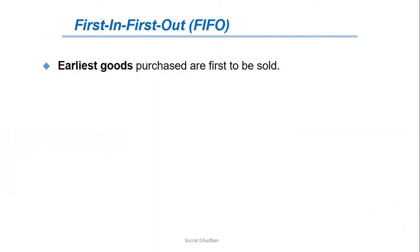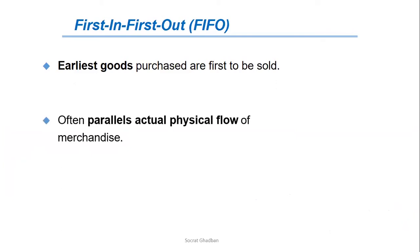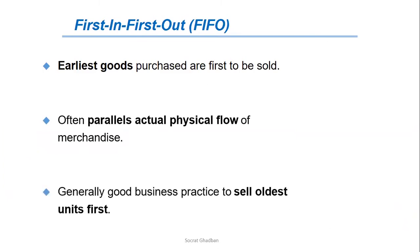The first-in-first-out method assumes that the earliest goods purchased are the first to be sold. FIFO often parallels the actual physical flow of merchandise, which is generally a good business practice — selling the oldest units first. Therefore, under the FIFO method, the cost of the earliest goods purchased are the first to be recognized in determining the cost of goods sold. This does not necessarily mean that the oldest units are physically sold first.